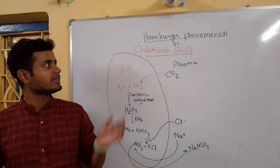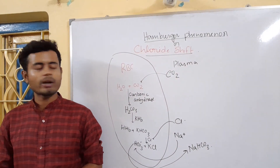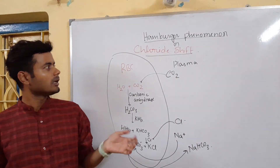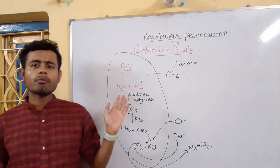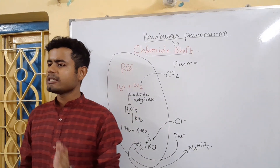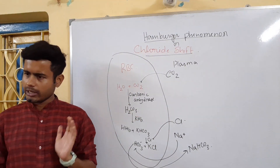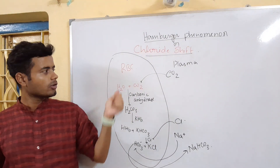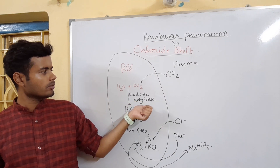What happens in the Hamburger phenomenon, or chloride shift? We know that carbonic anhydrase is present in RBCs. So, what will carbonic anhydrase do?